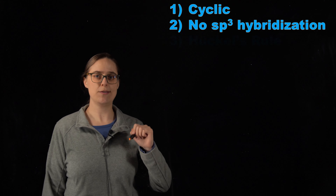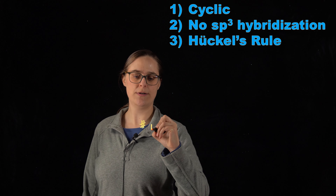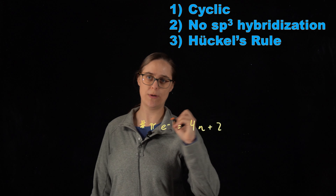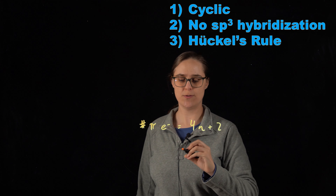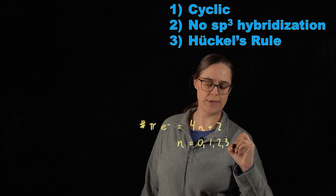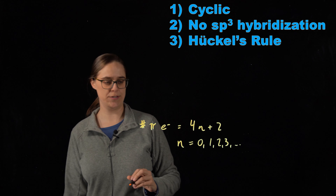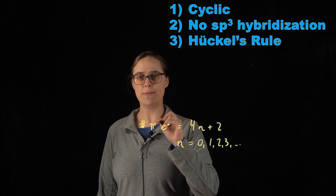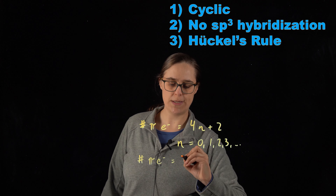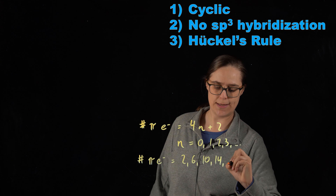Rule number three: our molecule must obey Hückel's rule. Hückel's rule says that the number of pi electrons must equal 4n + 2, where n is an integer — meaning n can be zero, one, two, three, and so on. Plugging integers into the equation, in order to be aromatic the number of pi electrons could be two, six, ten, fourteen, and so on — keep adding multiples of four.